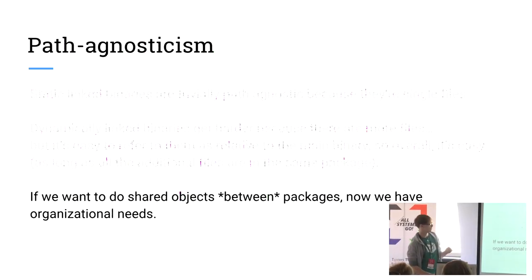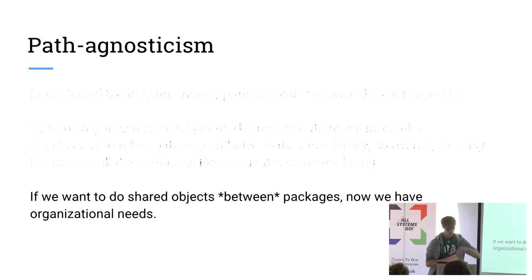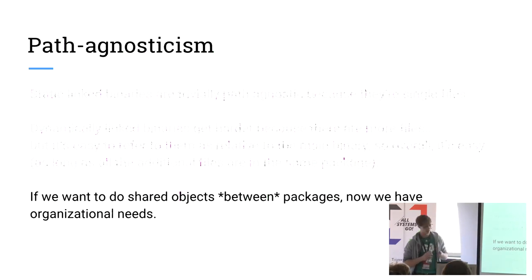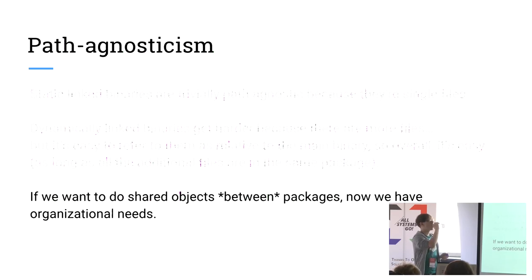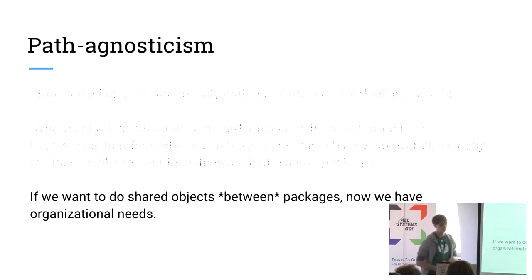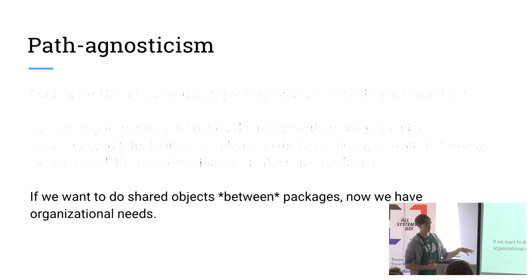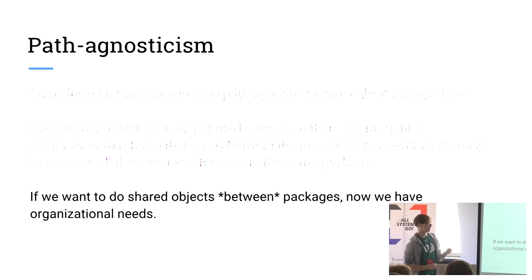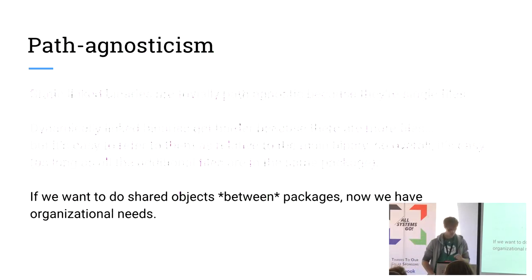So let's consider that whole problem solved. What I haven't talked about yet is how we should actually organize sharing of objects. So we can have path agnosticism. If we have path agnosticism, we can trivially have co-installability. Now let's talk about raising the bar even further — we want path agnosticism and co-installability and to be able to share things. This requires us to do a little more organization.